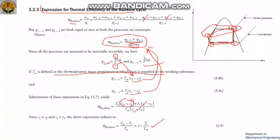They cancel because they are equal. So we reduce to (Tm minus T1) divided by Tm, or you can write 1 minus T1 by Tm.